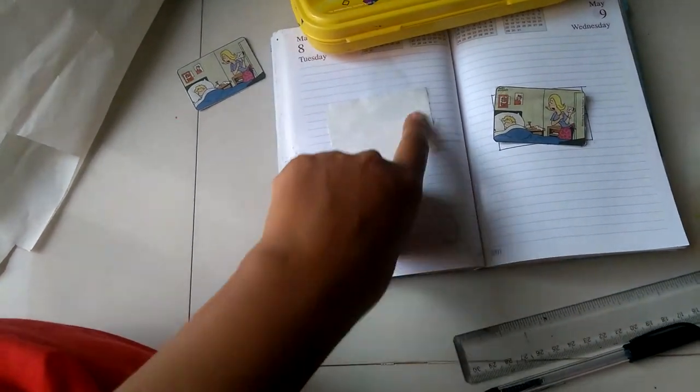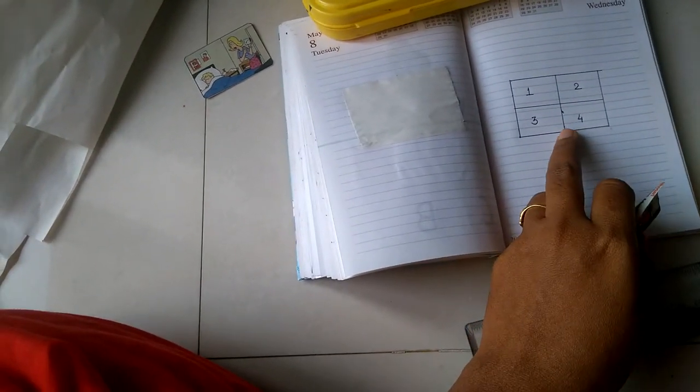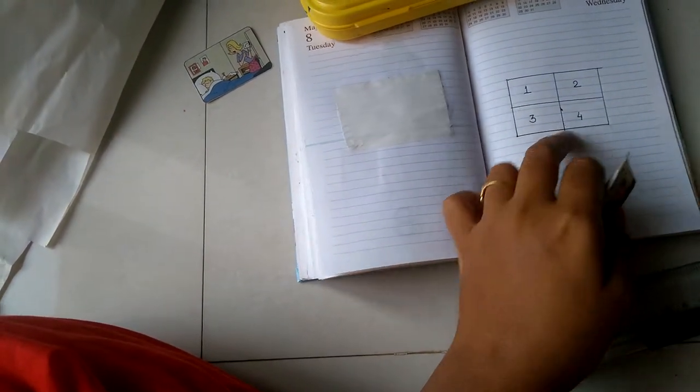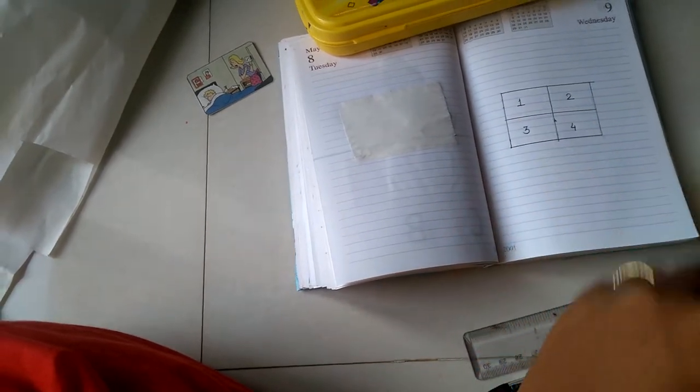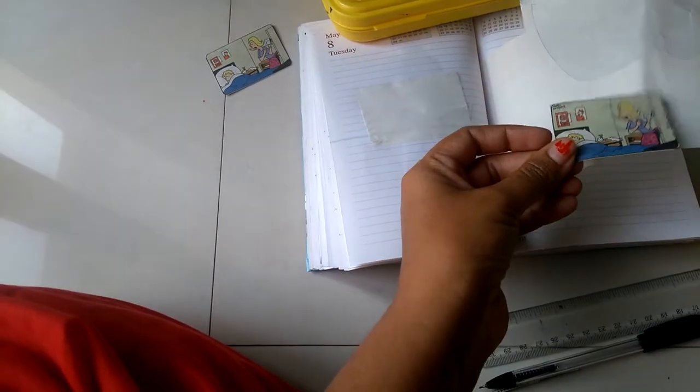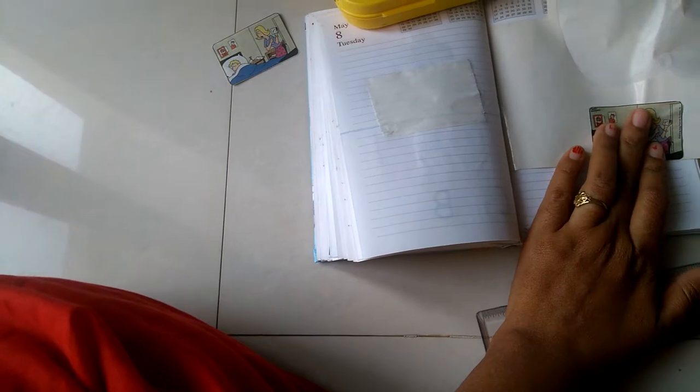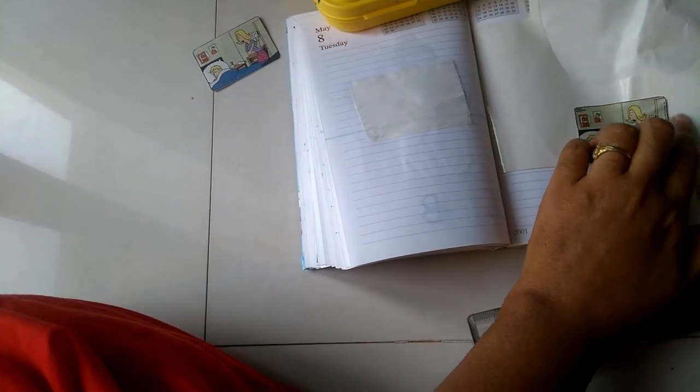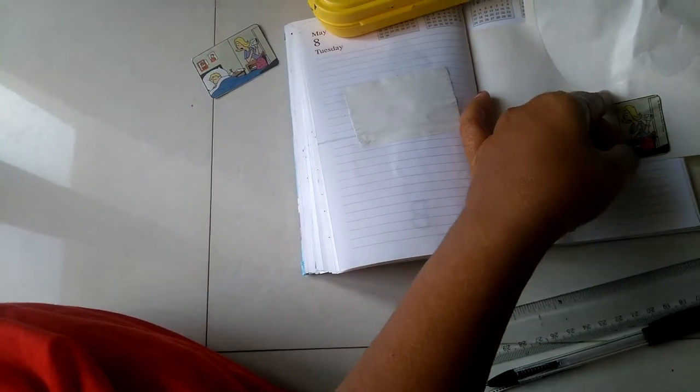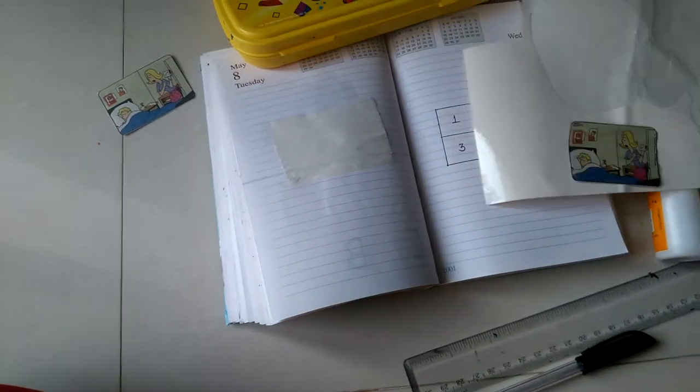Here I have drawn a grid and I have given numbers one, two, three, and four. Now I will paste this picture here and will cut from the borders. It will look like this.